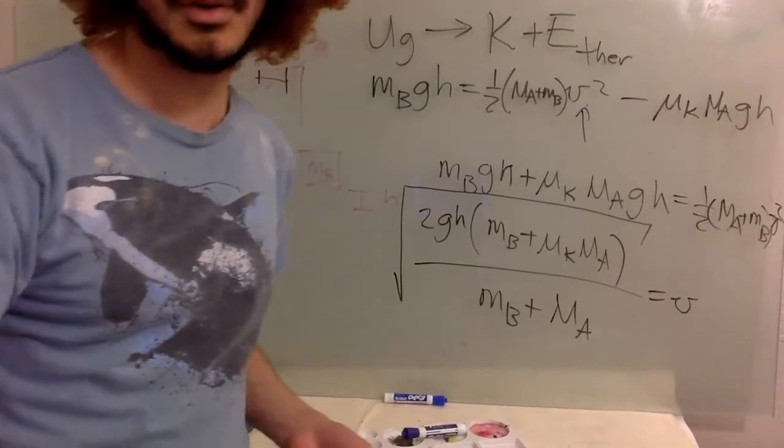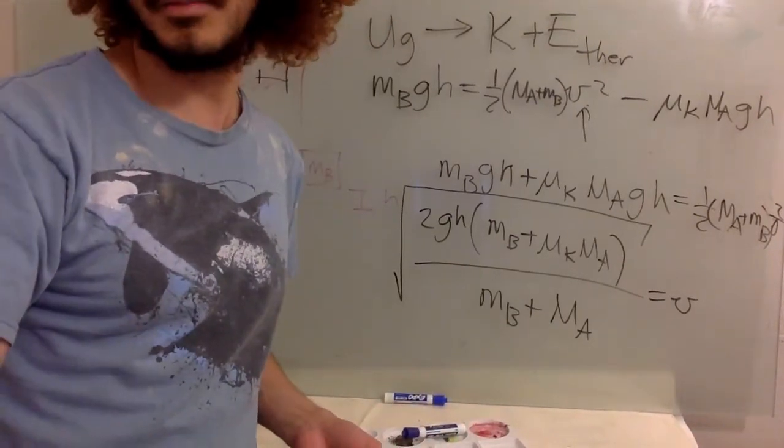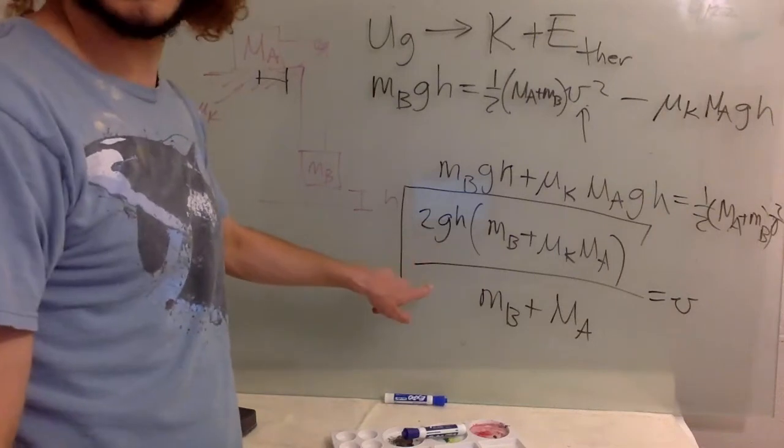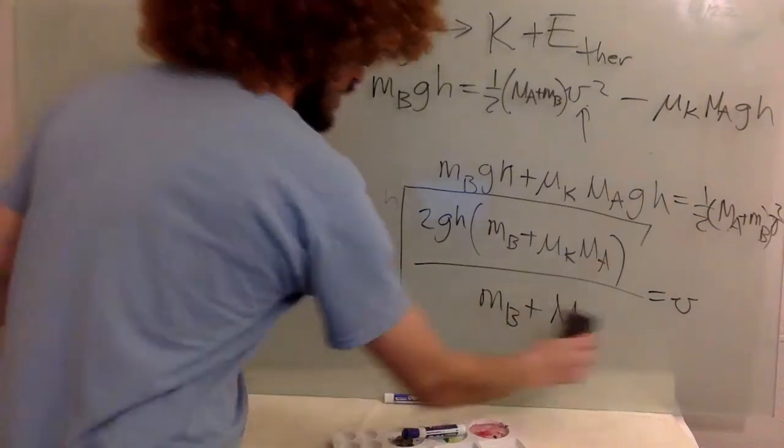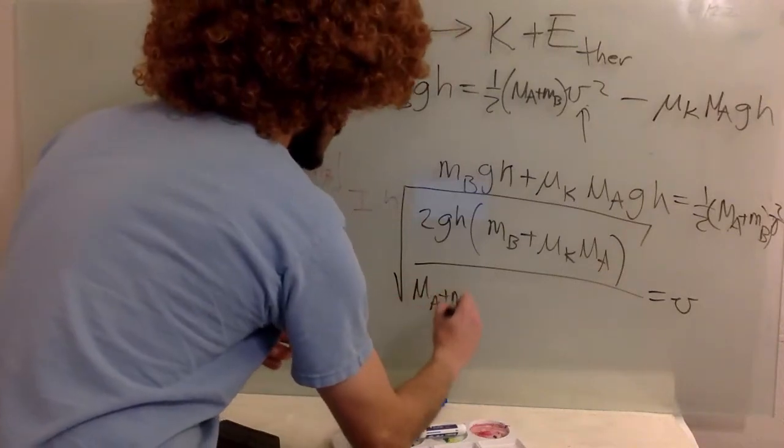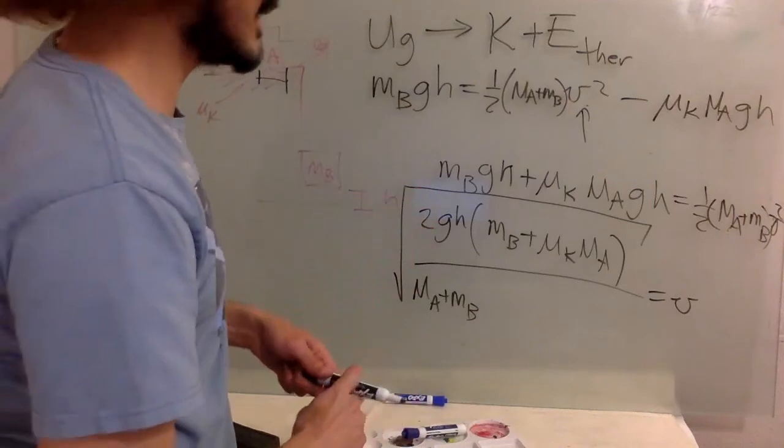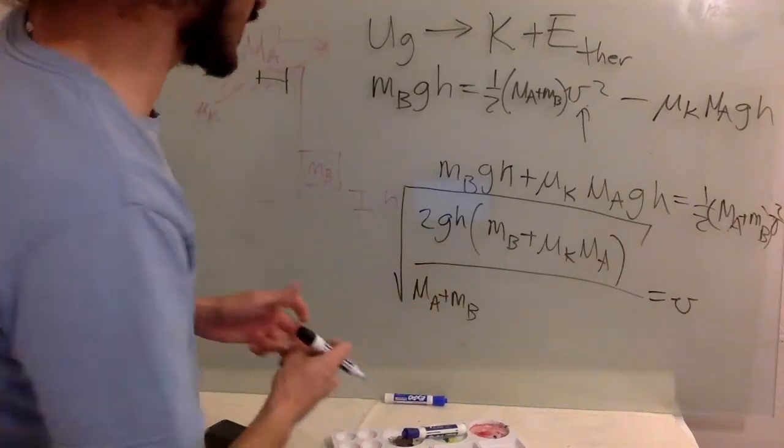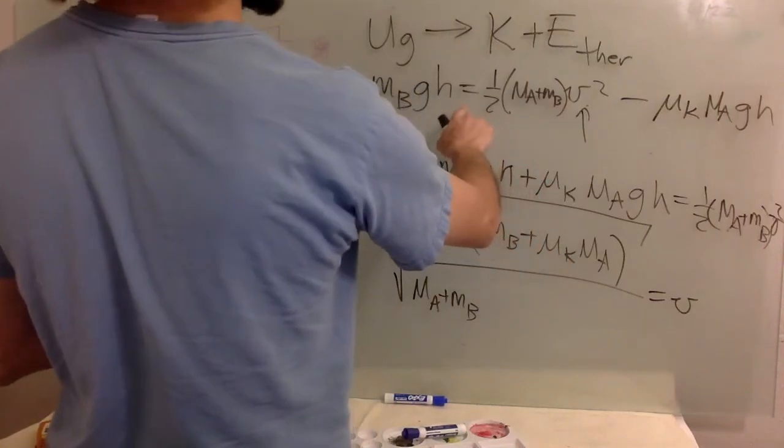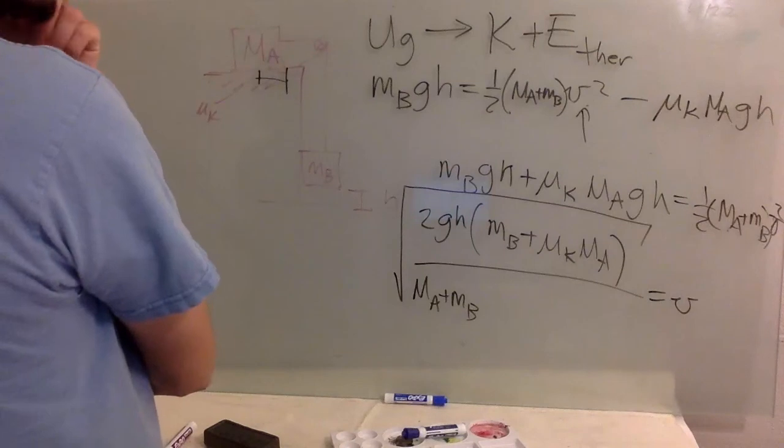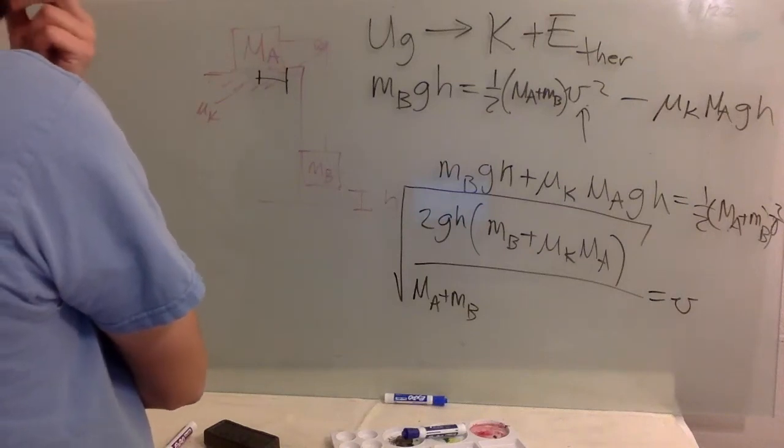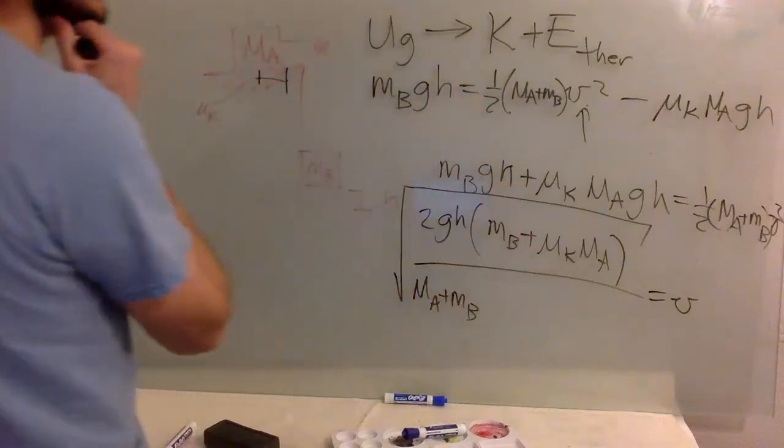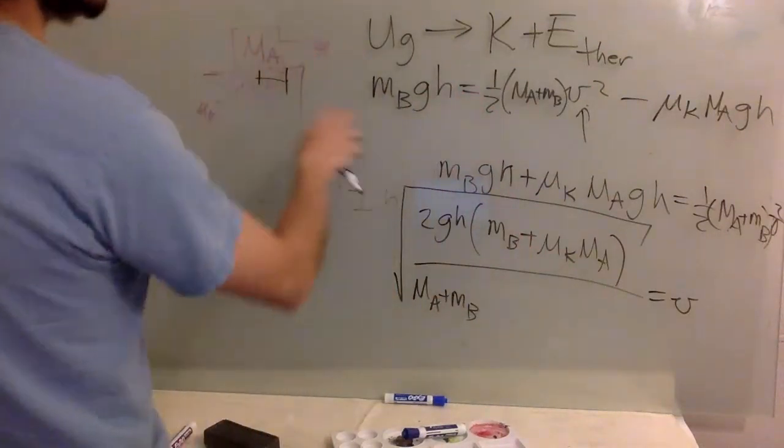So let's see if that's what we have in the solution. So they do it, 2 g h, they divide the MA plus MB over here. And then I have a negative, where did I miss the negative?